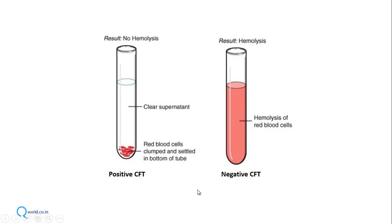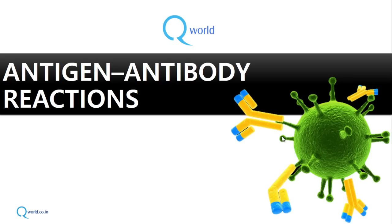If the result shows no hemolysis — you see red blood cells at the bottom with a clear supernatant — that is a positive complement fixation test. If you see hemolysis, it is a negative complement fixation test. We will continue with further antigen-antibody reactions in the next parts.